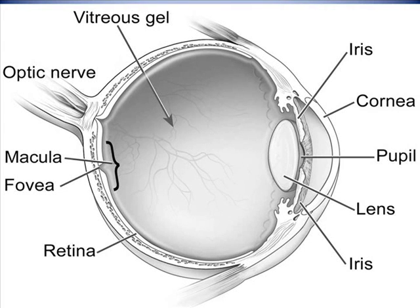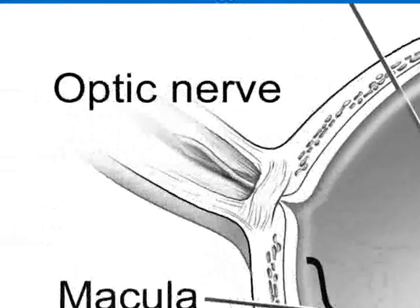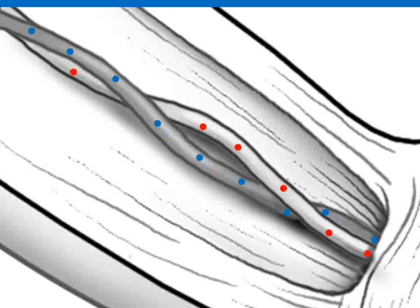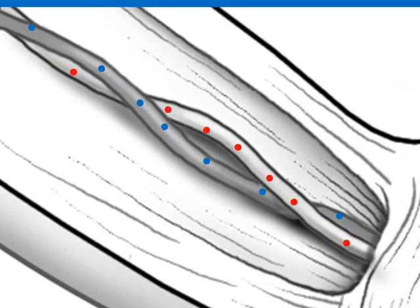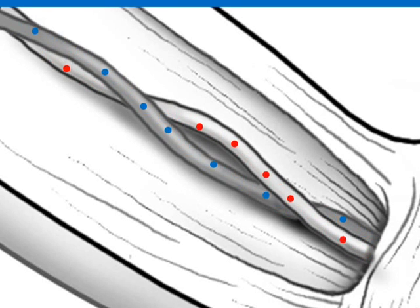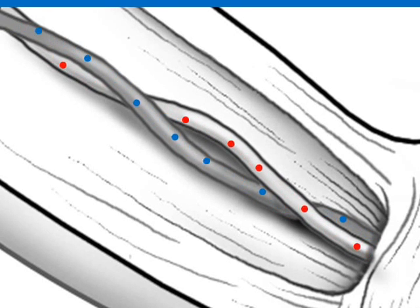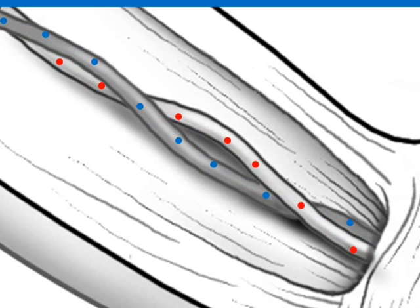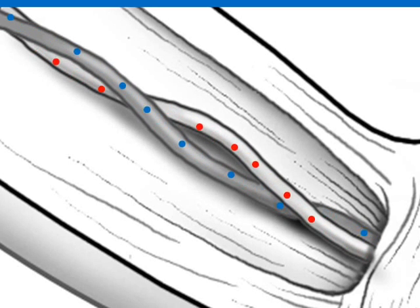The first pathway serves the retina from the inside of the eye. In a normal eye, oxygen-rich blood flows into the inside part of the eye via the central retinal artery, shown here with red dots. Oxygen-depleted blood leaves the inside part of the eye through the central retinal vein, shown here with blue dots.